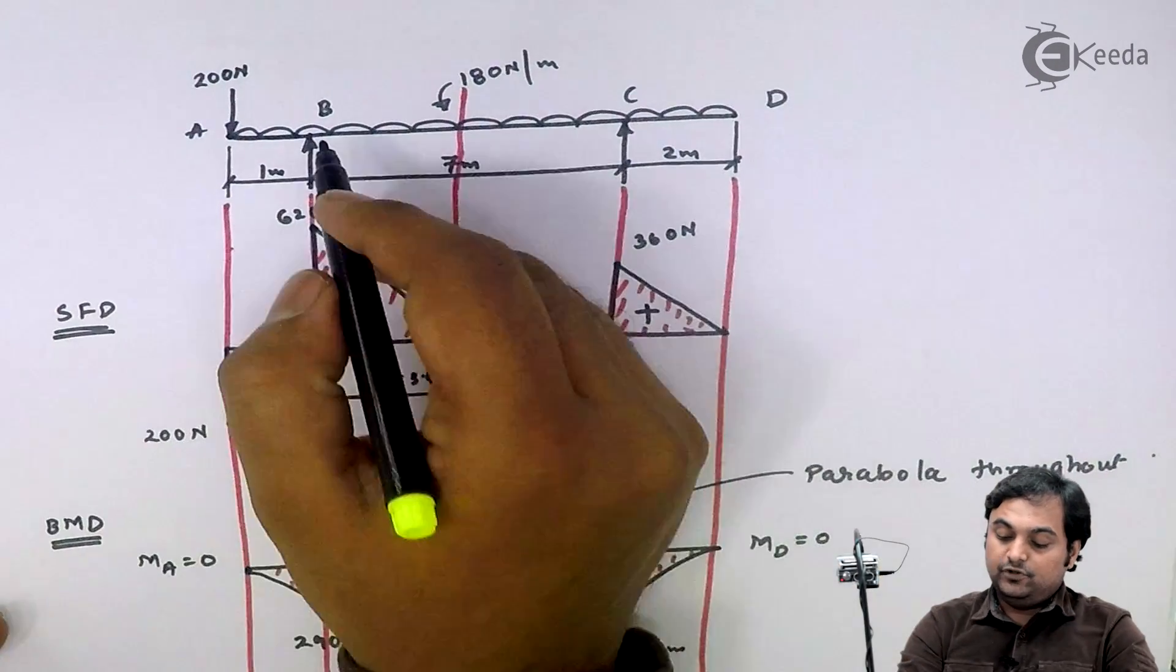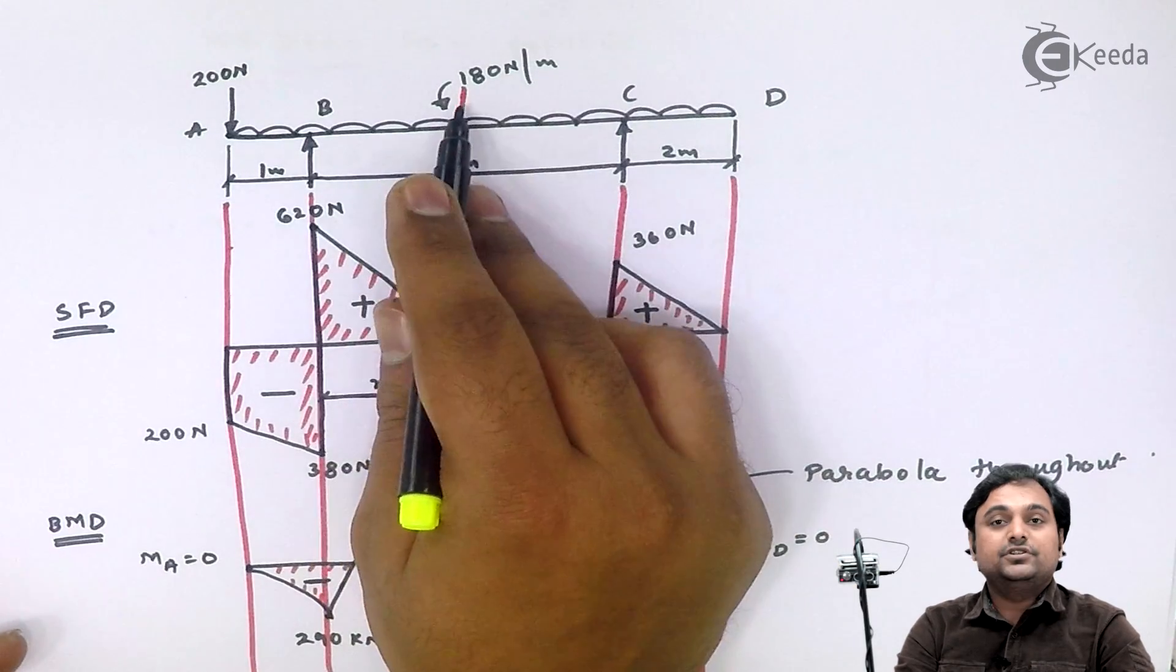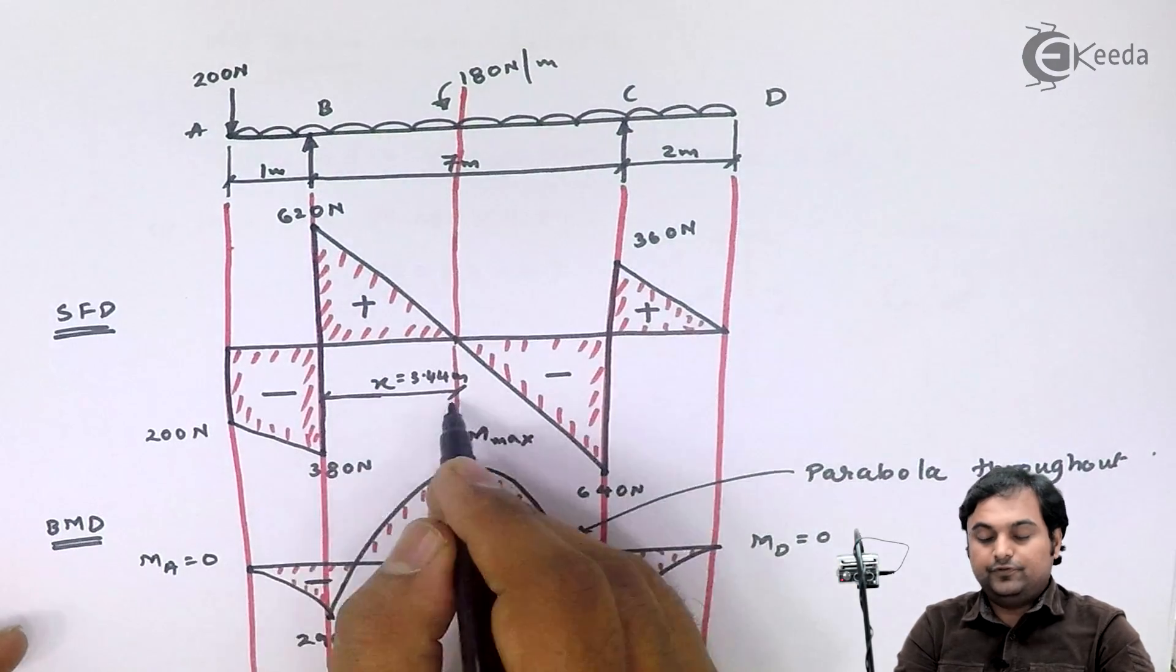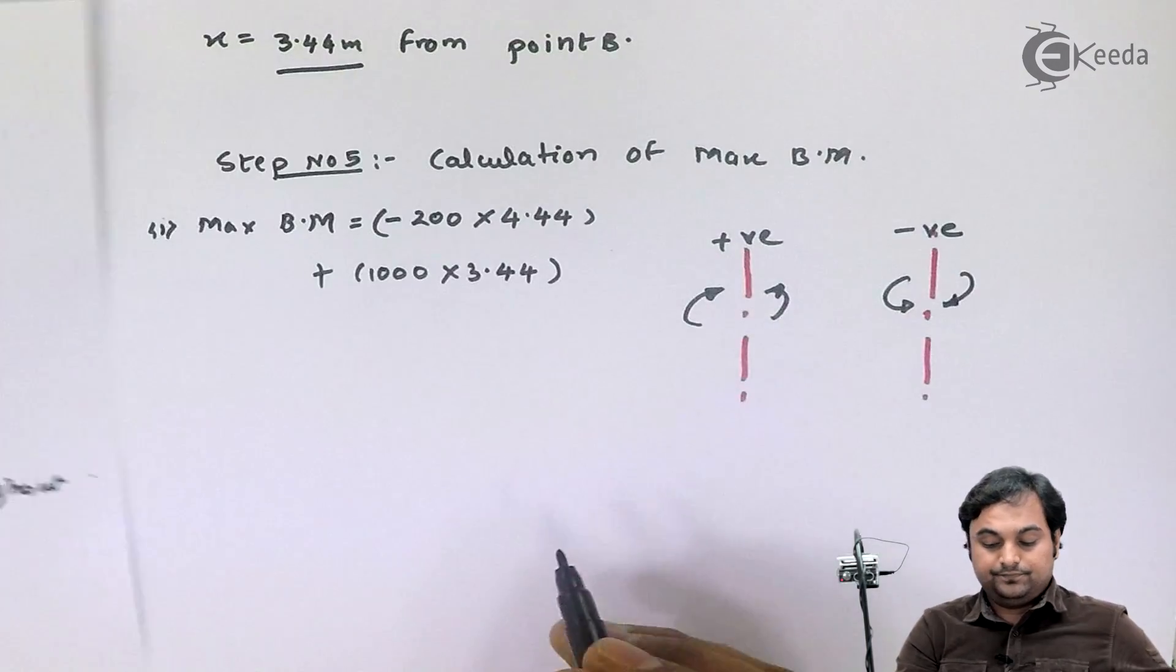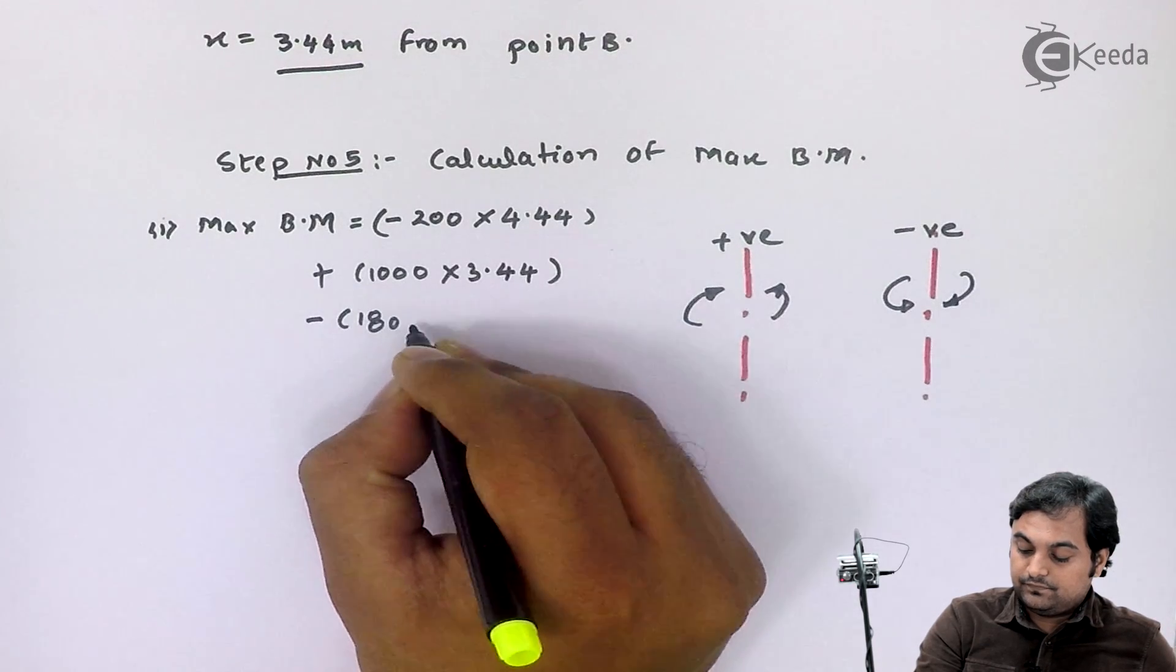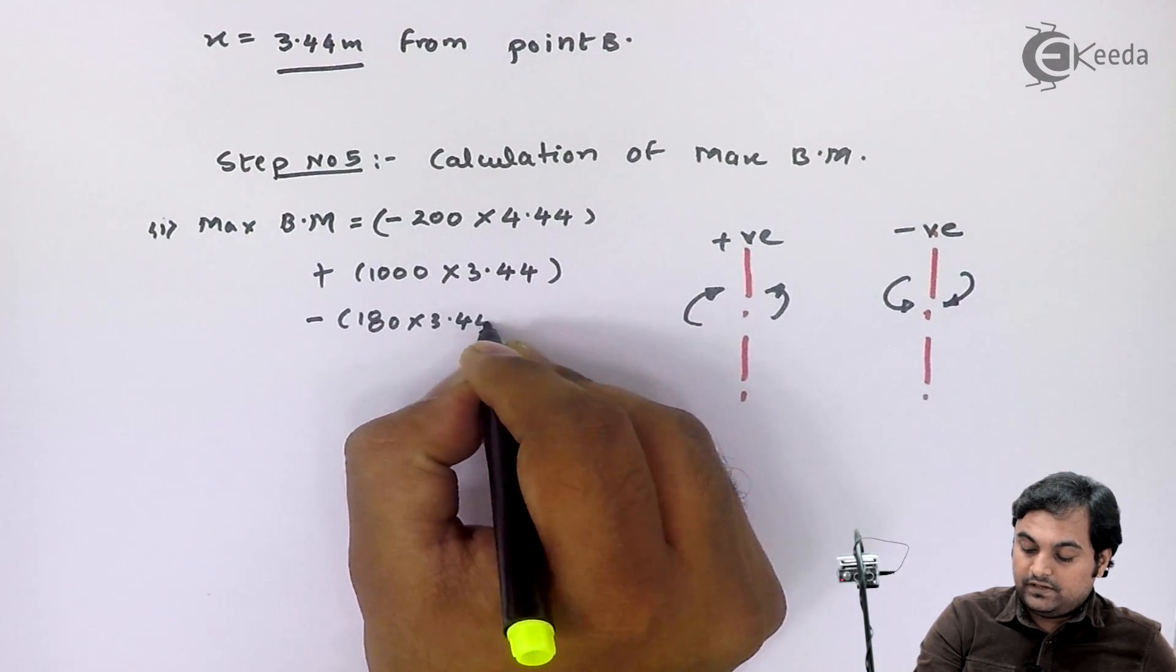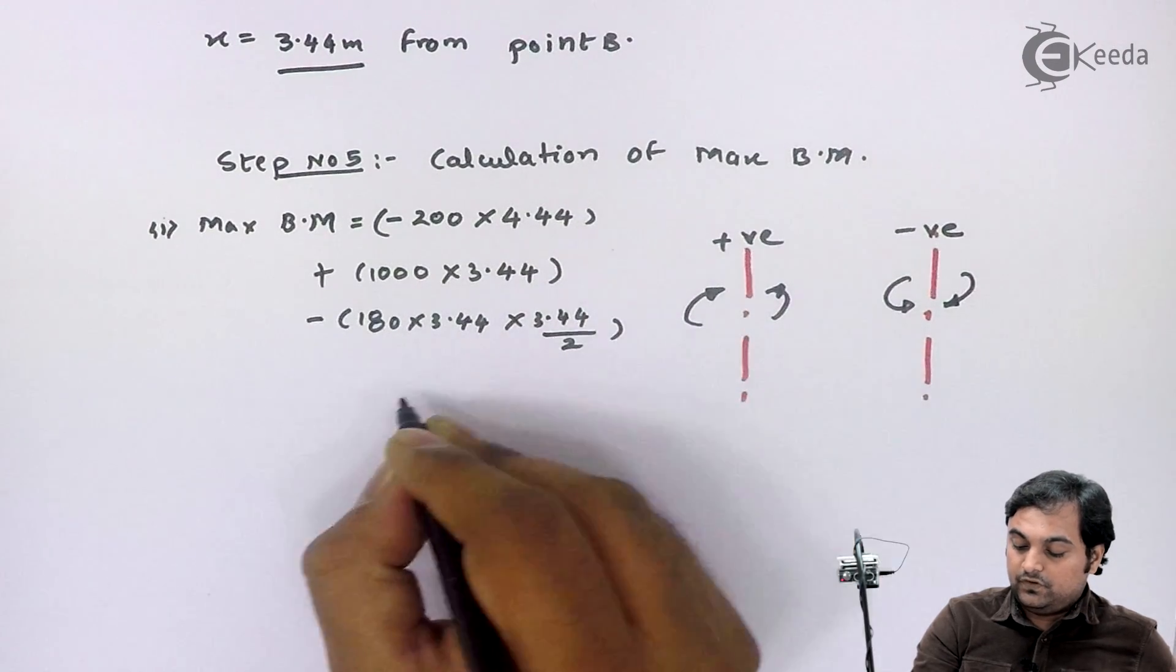Next, here we have UDL of 180 Newton per meter. I will assume this UDL is acting over 3.44 meter length, so it is 180 into 3.44 with a negative sign and acting at half of 3.44.